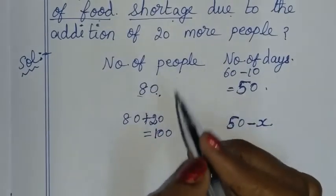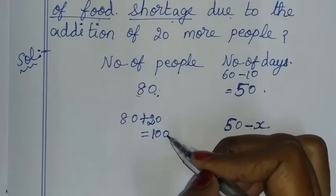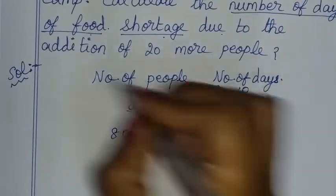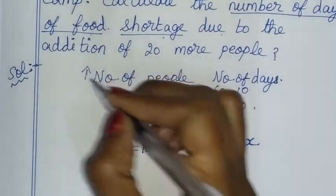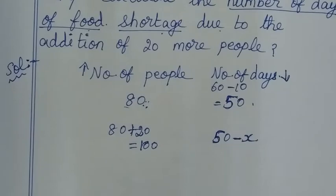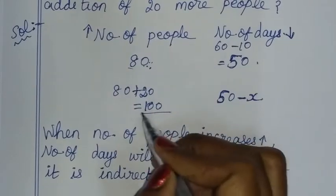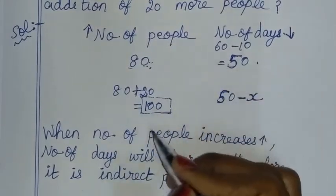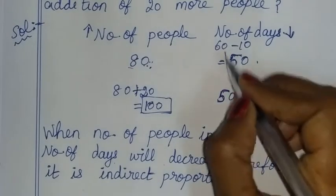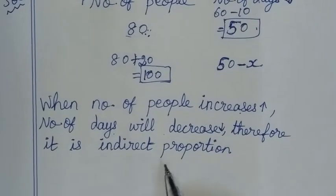If we look at this using direct proportion and indirect proportion: people will be adding, so 80 will become 100 people. When the number of people increases, the number of days will decrease. This is indirect proportion.